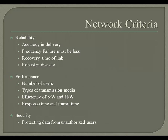The second parameter is performance. Performance is measured by the number of users connected, the type of transmission media (guided or unguided — fiber optic cables offer very high speed), the efficiency of software and hardware, and response time and transit time. Response time should be less, as it is the time for the first response to begin. Transit time is the time required from sender to receiver. The last criterion is security — protecting data from unauthorized users. These are the main criteria for computer networking.